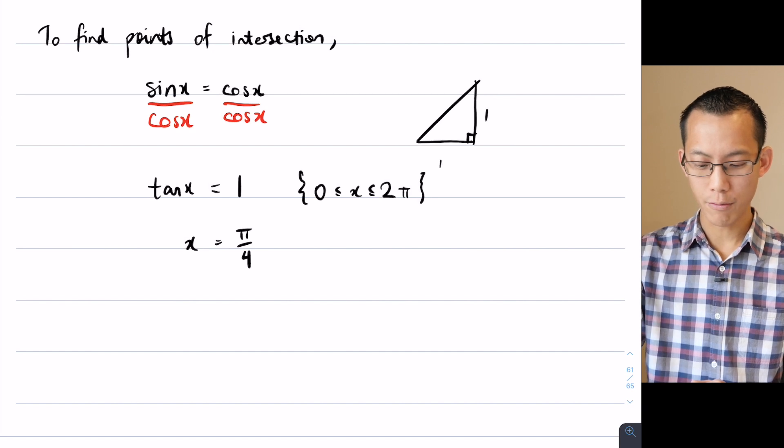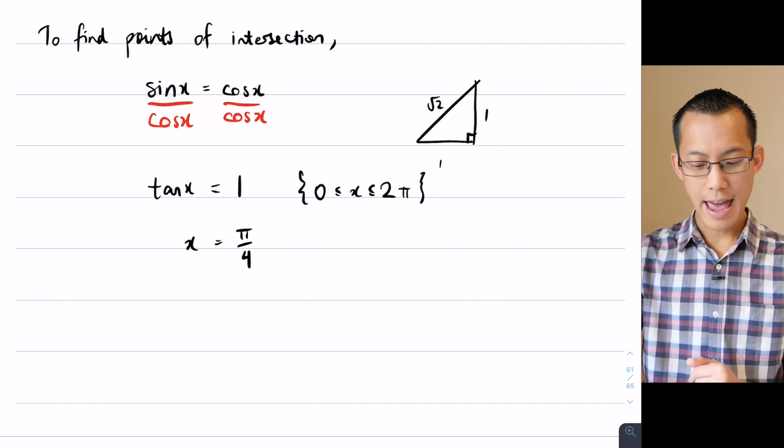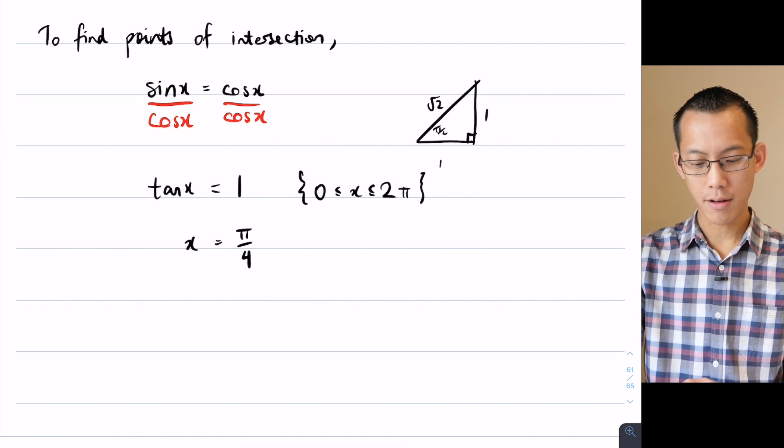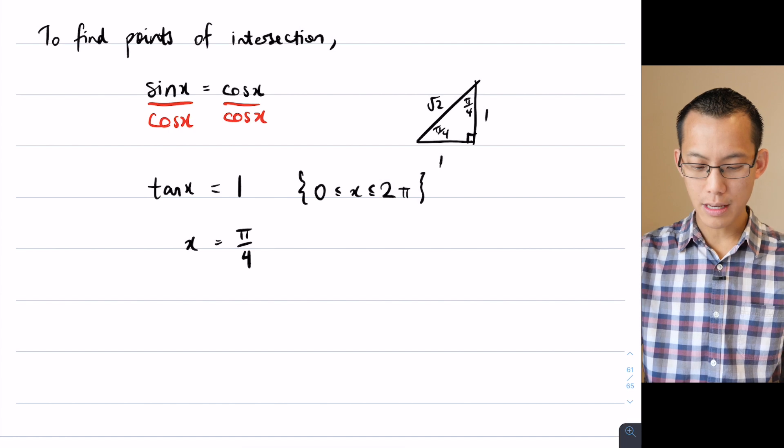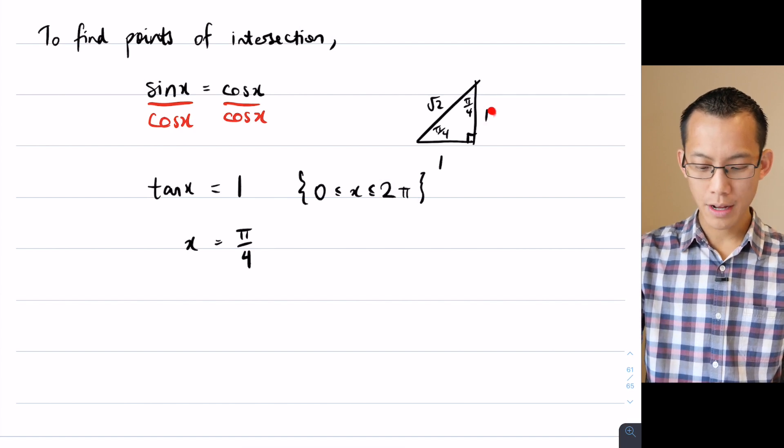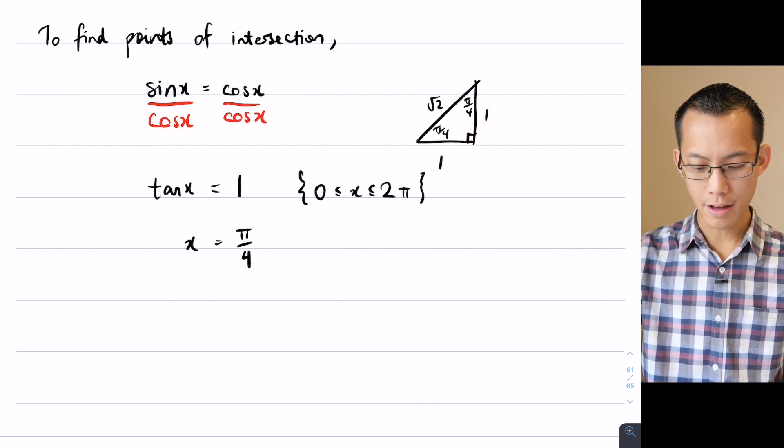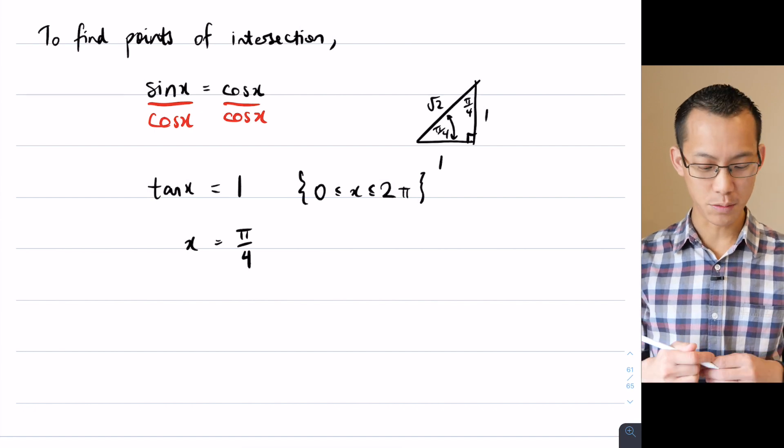This is the 1, 1, root 2 triangle, so it's right-angled and isosceles, meaning you've got π on 4, π on 4 in the corners. So tan of course is opposite on adjacent, so if you were looking at either point of view, the opposite on adjacent will give you 1.